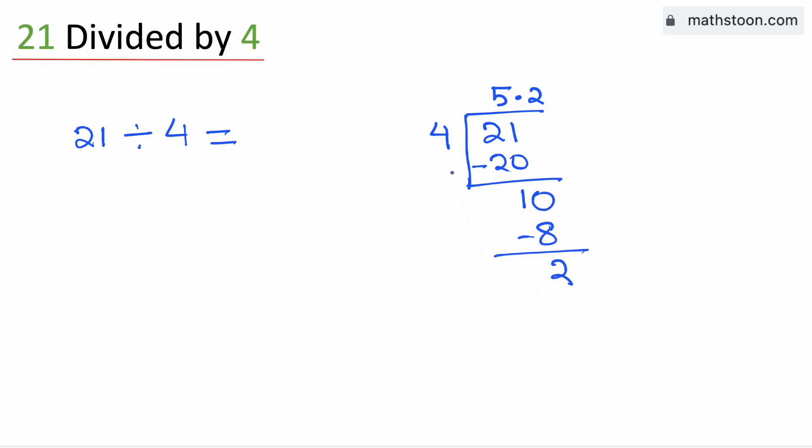Again 2 is less than 4, that is why we will again borrow 10 and 4 times 5 is 20, subtract we get 0.